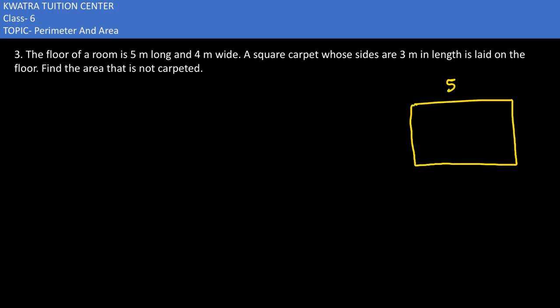5 meters is its length and breadth is 4 meters. Then they are saying we have put a square carpet over it, and the dimensions are 3 meters each. Now what do we need to remove here?